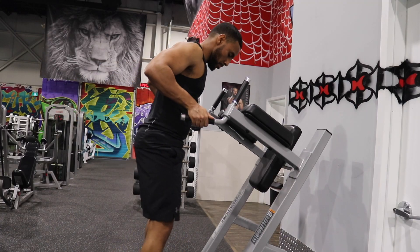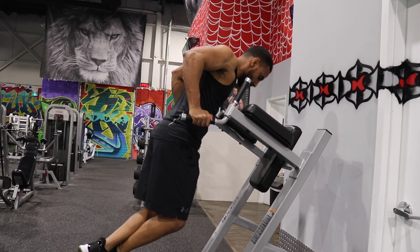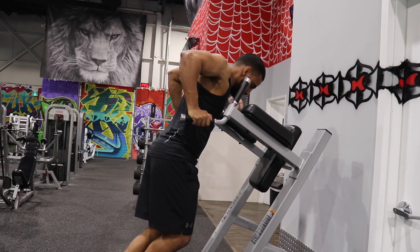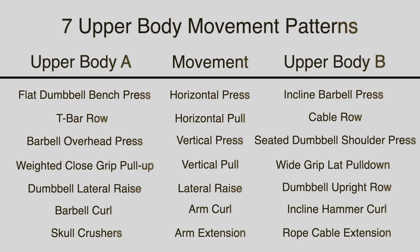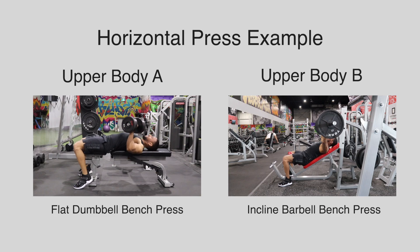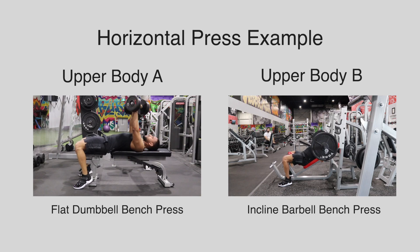A good starting point is to do one exercise per movement, but to have two workouts in the week where you are training your upper body, so you can do different variations of these movements. Here's an example of two workouts in the week using the same movement patterns but with different exercises. This can be done with an upper lower training split with a day or two of rest in between. For example, in your first upper body workout, your horizontal press can be a flat dumbbell press, but then your second upper body workout later in the week can be an incline barbell press.